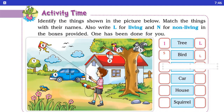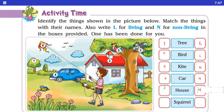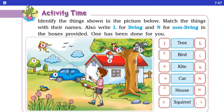We know that tree is a living thing — that's number six. Now, tell me — kite: living thing hai ya non-living thing hai? It's a non-living thing. Car — car kahan pe hai? Number four. And car is a non-living thing. House — two number pe hai. House kya hai? It's a non-living thing. Squirrel kya hai? Ek living thing hai. So write L for squirrel, which is number three. Because squirrel is an animal, and we know that plants, animals, and human beings are all living things.